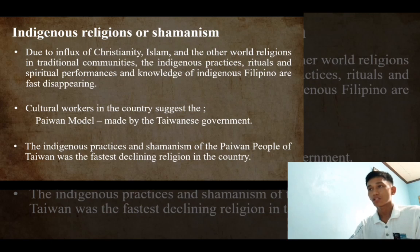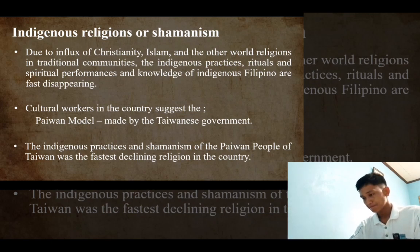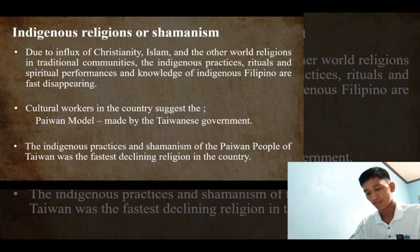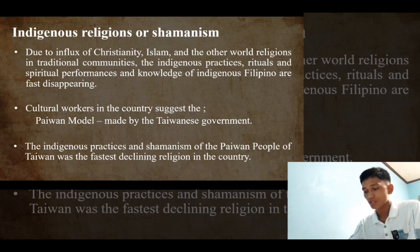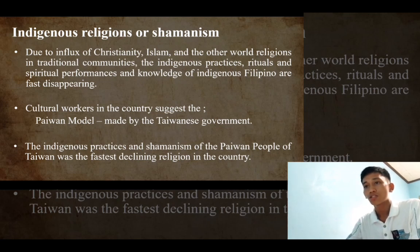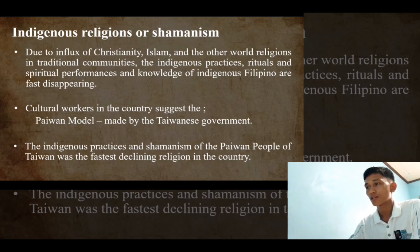Cultural workers in the country suggest the Taiwan model, made by the Taiwanese government, as a means to preserve indigenous religions. The indigenous practices and shamanism of the people of Taiwan serve as a reference for the fastest declining religion in the country.